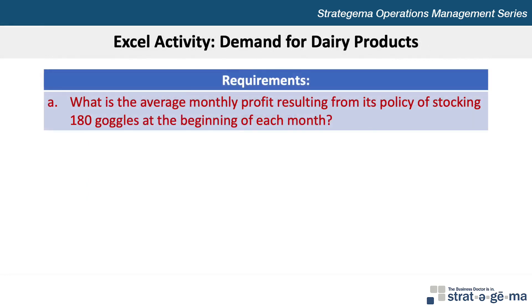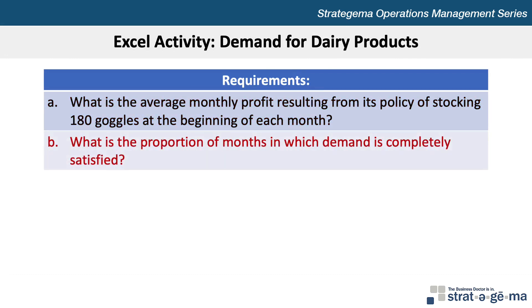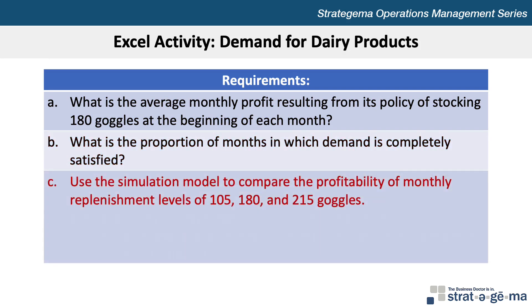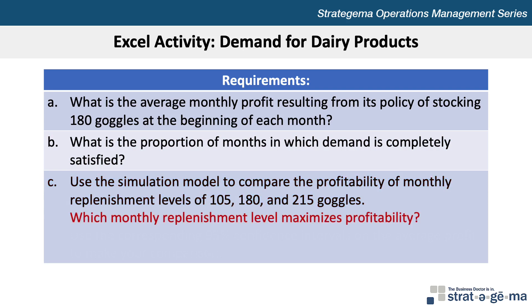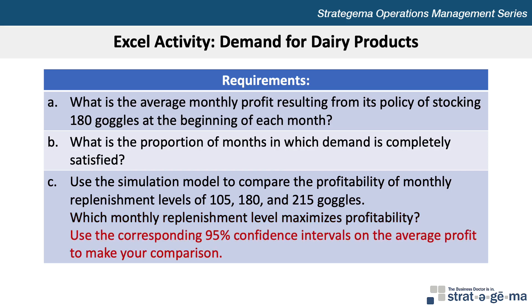Requirement A is to determine the average monthly profit resulting from the policy of stocking 180 goggles at the beginning of each month. Requirement B is to determine the total proportion of months in which demand is completely satisfied. Requirement C asks us to use the simulation model to compare the profitability of monthly replenishment levels of 105, 180, and 215 goggles, determine which maximizes profitability, and use the corresponding 95% confidence intervals on the average profit to make our comparison.